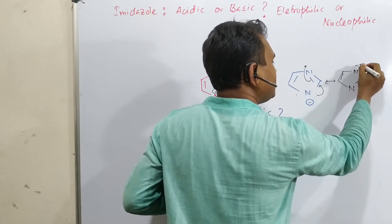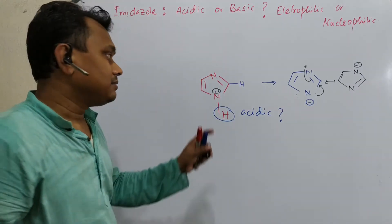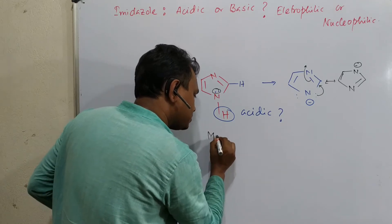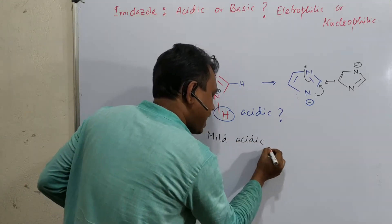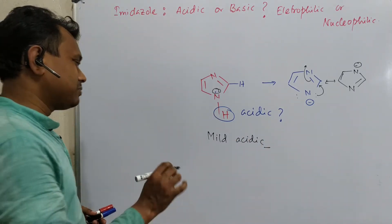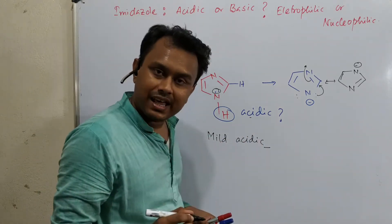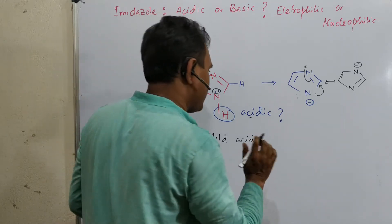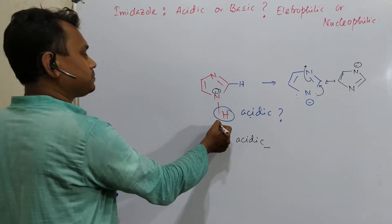This produces equivalent canonical structures. So imidazole is mildly acidic. I won't give you the exact pKa data as it can be confusing, but remember: imidazole is more acidic than alcohol and less acidic than phenol — in between alcohol and phenol. So imidazole is acidic because of this NH proton.